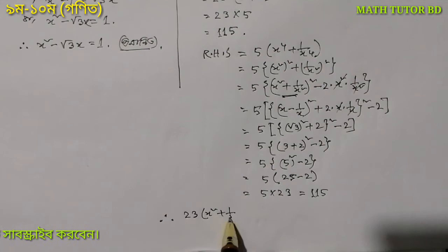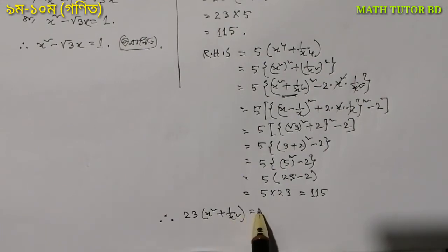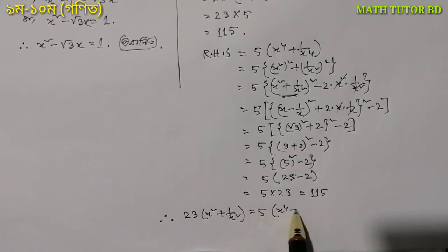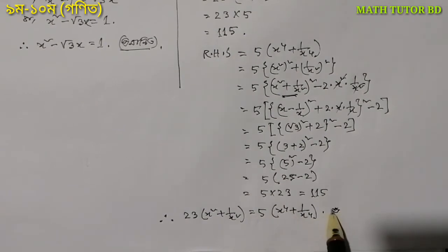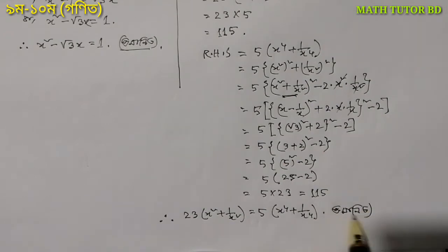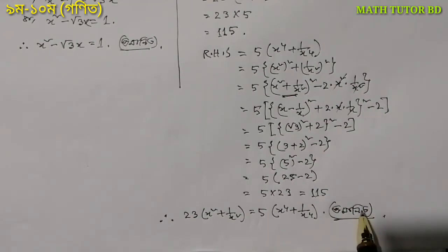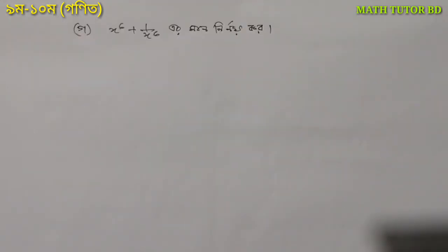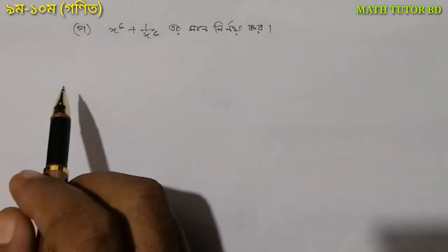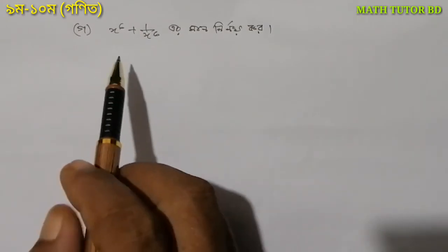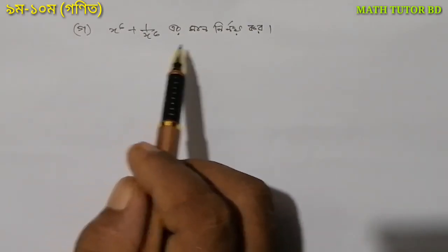This gives x to the power 4 plus 1 by x to the power 4, and x to the power 6 plus 1 by x to the power 6.